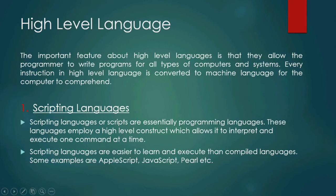High-level language is mainly divided into two types: scripting language and object-oriented language. Examples of scripting language include JavaScript, Perl, and PHP. These kinds of languages are used as the back end of a website or app.